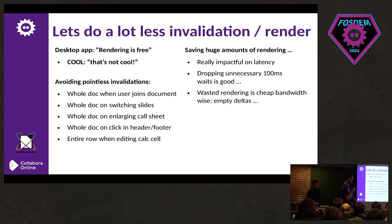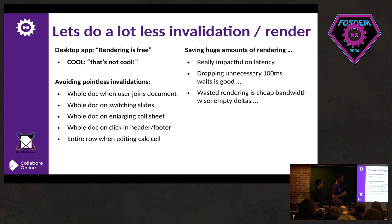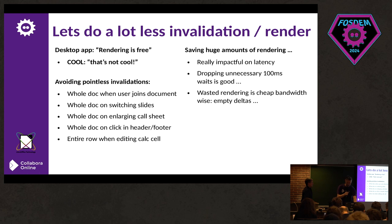In multi-user document tests we noticed full-document invalidation happening when users join documents. Clicking in headers and footers was causing the same thing. Fundamentally, invalidations and redrawing on the desktop have become so cheap that, while in the distant past we were good at keeping invalidations down, we've become slack in recent decades. We now need to revisit that and bring things down to smaller rendering areas and fewer invalidations. The good news is this improves LibreOffice desktop as well.